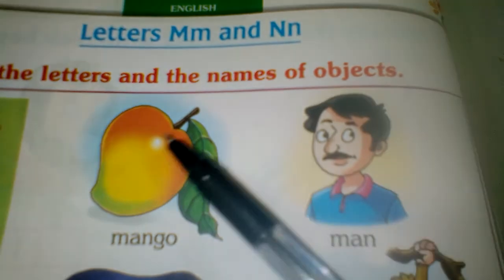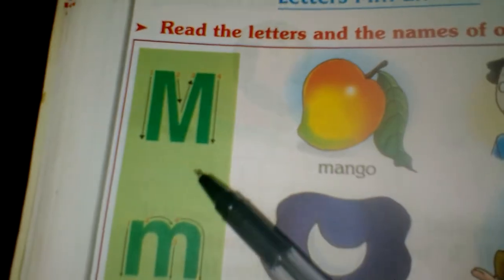Read the letters and the names of objects. What is this? Capital M. This is small letter m. This is capital M. This is small letter m.